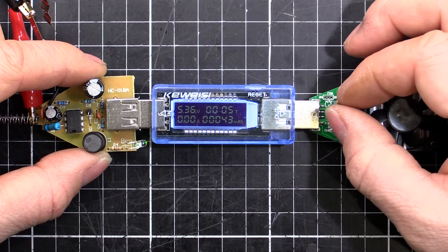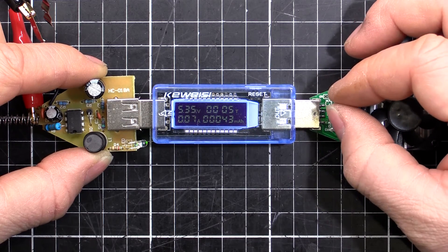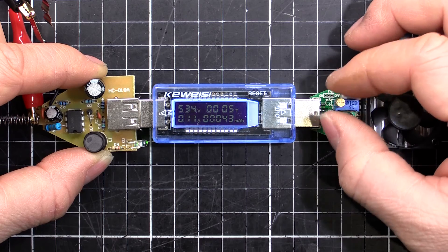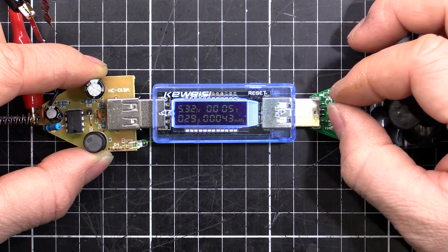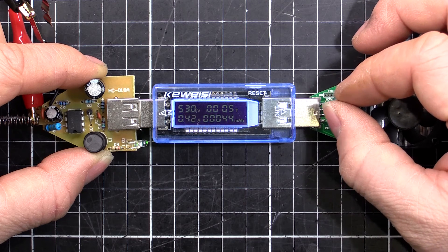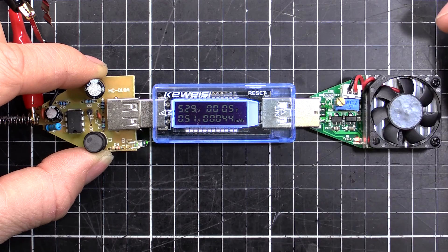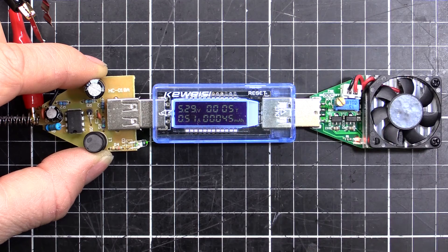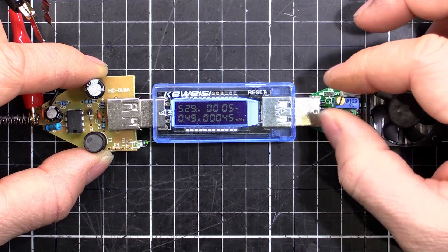So if I turn this one up, we'll see the current there start to come up. So we got 0.7, let's bring up to half an amp. About half an amp there, we're still above 5 volts, so no problems at all.